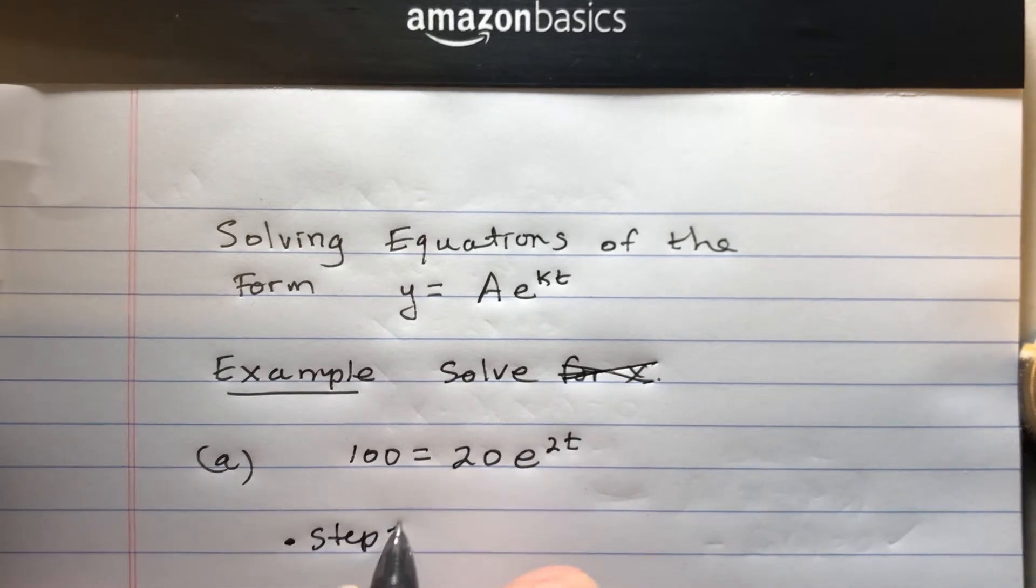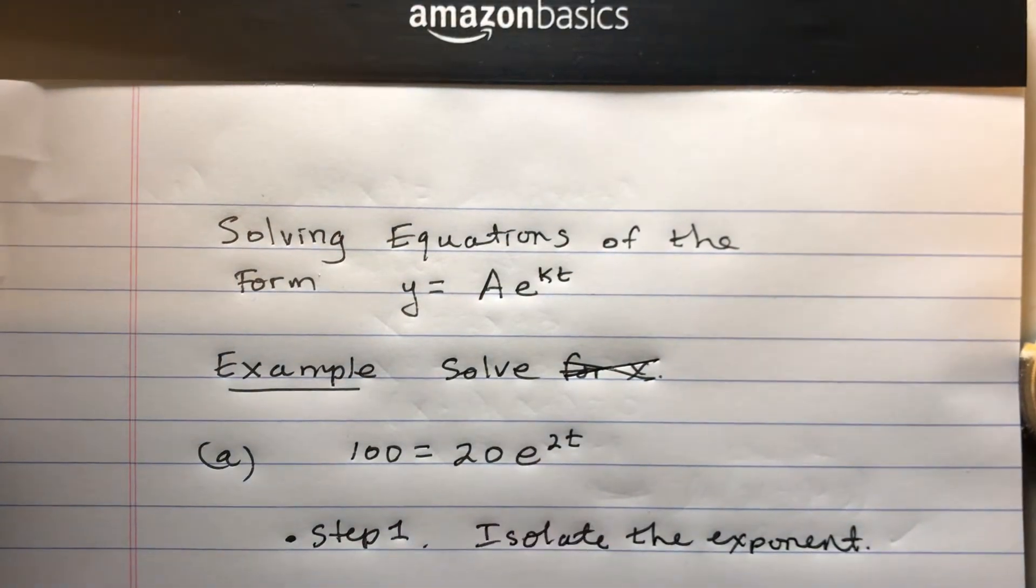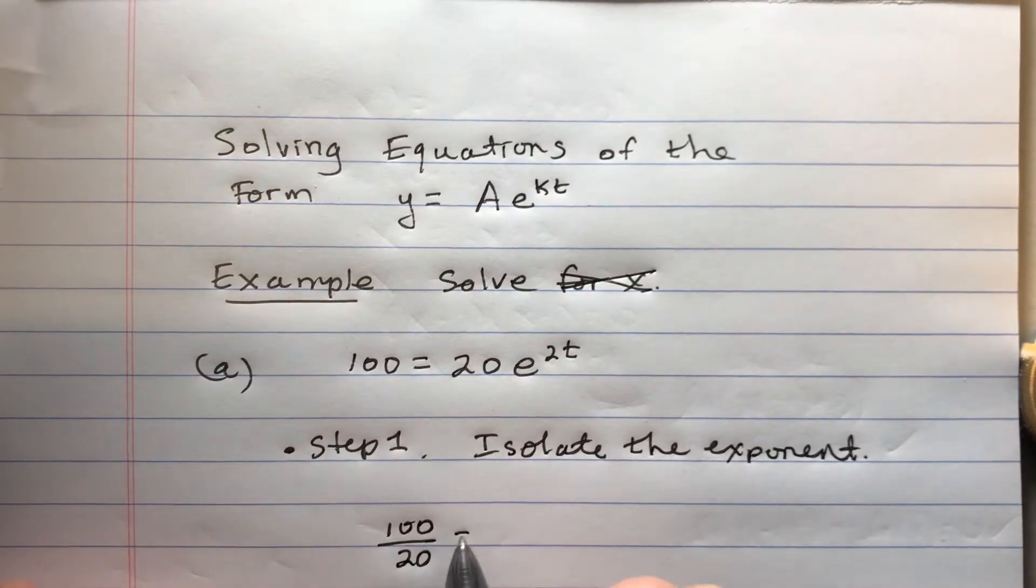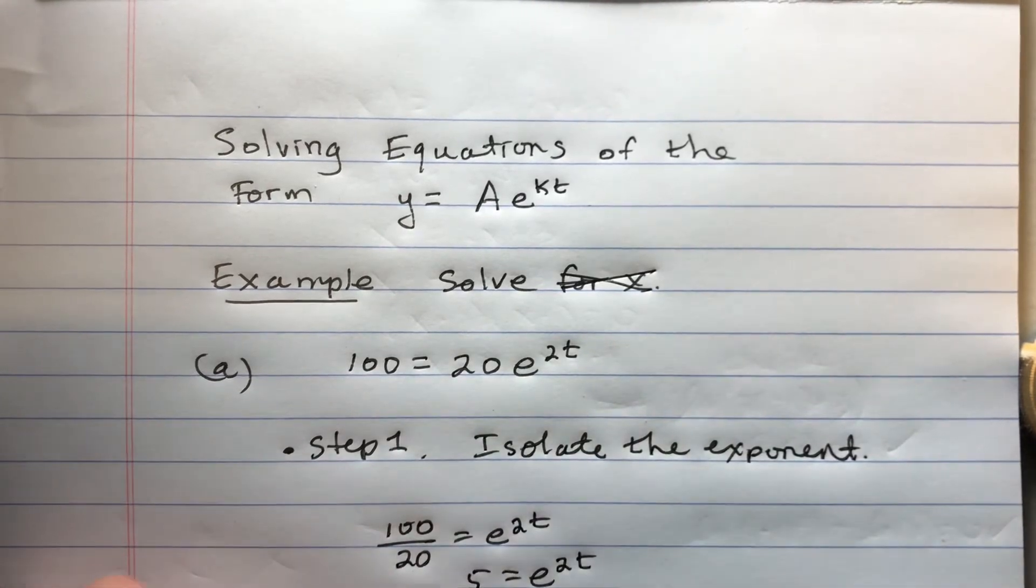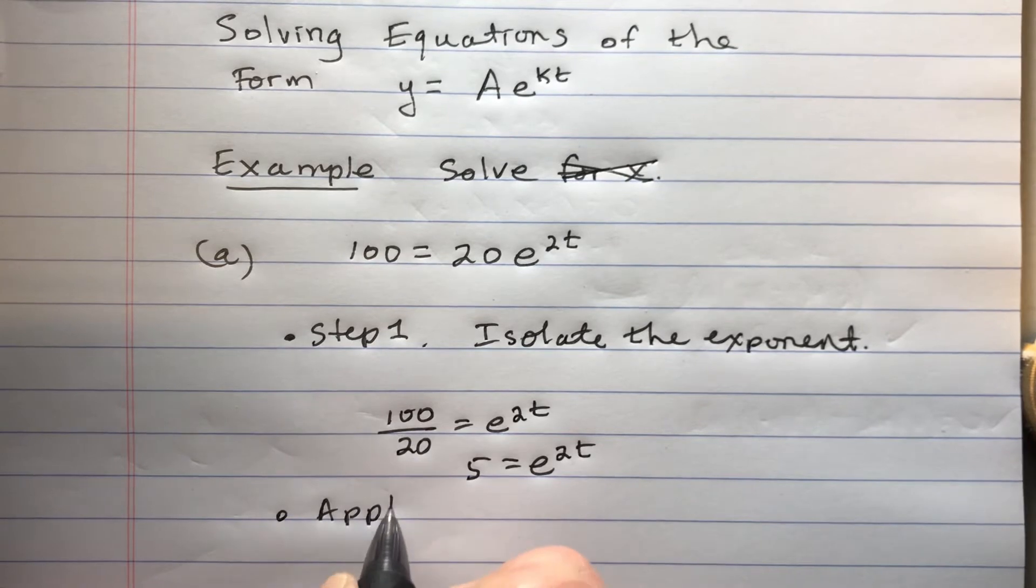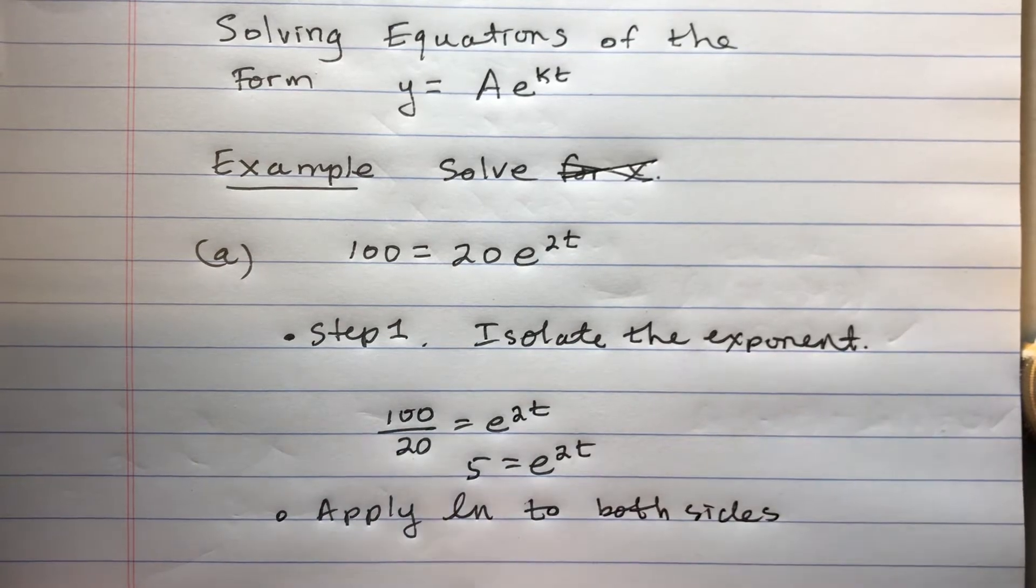All right, so step one is that we're going to isolate the exponent. And what I mean by that is I need the exponent all by itself. So I'm going to divide both sides by 20. And so that will make 5 equals e to the 2t. And the reason I'm going to do that is because I am now going to apply logarithm to both sides.